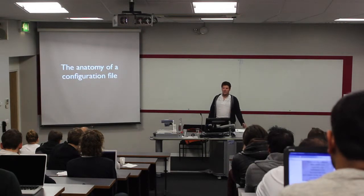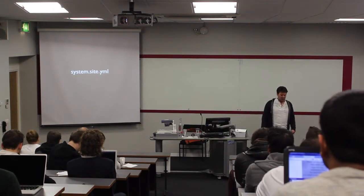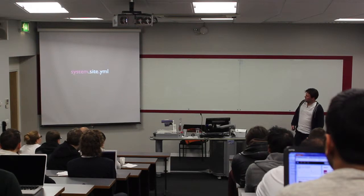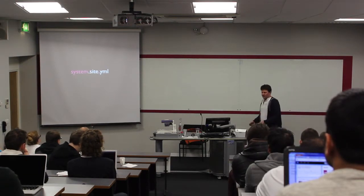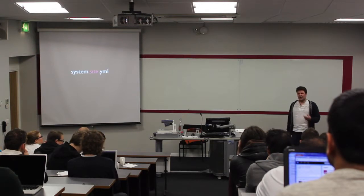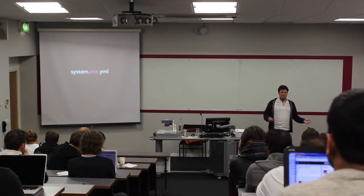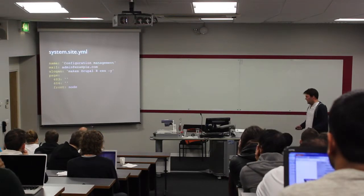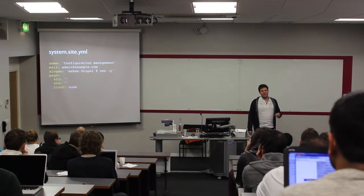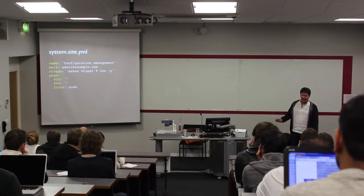I'm going to tell you a little about what a configuration file looks like, starting with the file name. One of the first conversions we did was of the site name and the front page, and we created a file called system.site.yaml. The 'system' part says the extension that owns it — an extension is either a module, theme, or profile. The next part, 'site', indicates what you're going to find. So we know by looking at that that we're going to find the system site settings. The file is as simple as a site name — in this example, 'Configuration Management' — and the email address and slogan can all be maintained in this file.